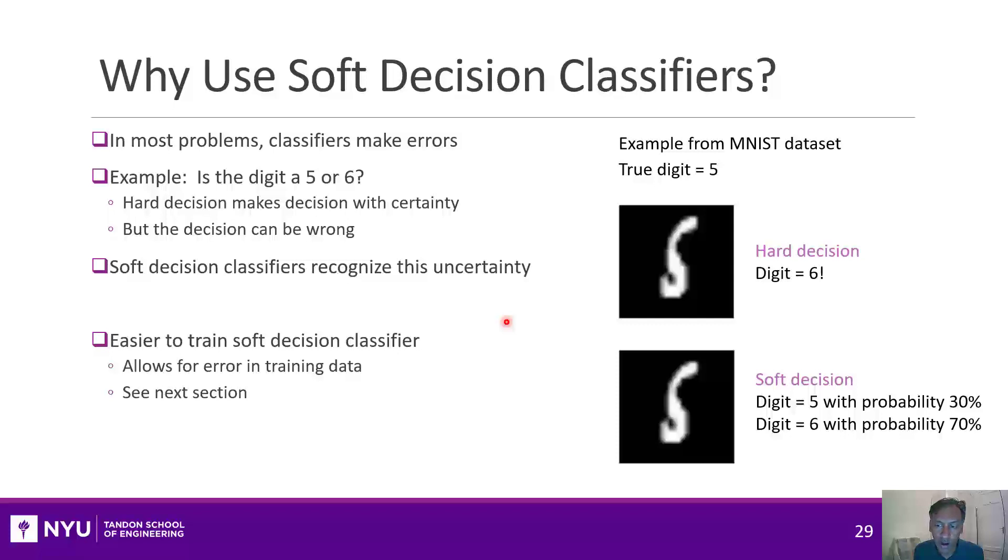There's two reasons why soft decision is good. First, we're going to show later that it's easier to train soft decision classifiers because they allow for errors in training, and that lets us quantify how close those classifiers are working on the training data. The other part is it gives a confidence measure. For example, in this digit, maybe it tells you only with 70% probability that it's digit 6, and if you really need to be more certain, then maybe you do something else.